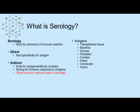Serology tests for the presence of immune complexes in an immune reaction. We have direct antigen testing, which tests specifically for the antigen, as well as indirect testing, which tests for the antigen-antibody complex and is more common in a serology lab. Things that can act as antigens include transplanted tissue, bacteria, viruses, parasites, fomites, pollen, chemicals, and toxins.